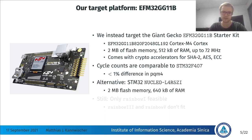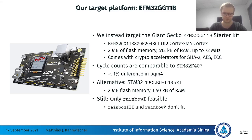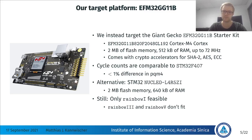If you don't want to use the EFM board, there's also an STM32 Nucleo board which has quite a bit more RAM. It comes with two megabytes of flash and 640 kilobytes of RAM, so this is also something you could use for implementing Rainbow. This board is now also supported by PQM4. However, even with 512 or 640 kilobytes of RAM, only Rainbow 1 is feasible. Rainbow 3 and Rainbow 5 are a little bit out of reach, so in this talk and the paper we focus on Rainbow 1.